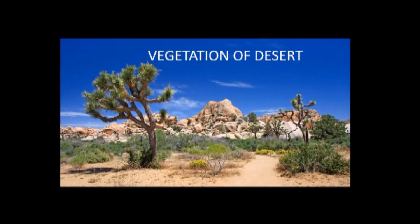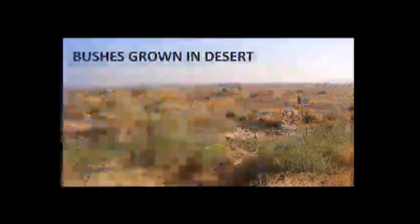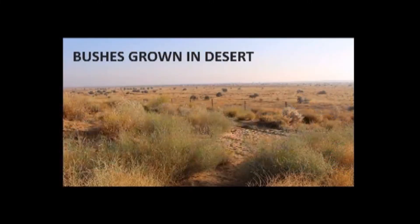In the desert, shrubs, thorny plants and grass grow due to lack of water. Thorny trees like keeker, cactus, babool and dates are the main vegetation here. Small bushes grow here in the rainy season.